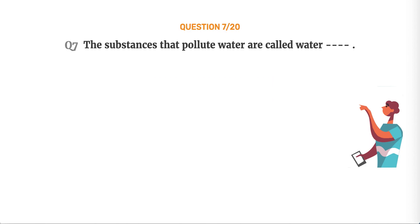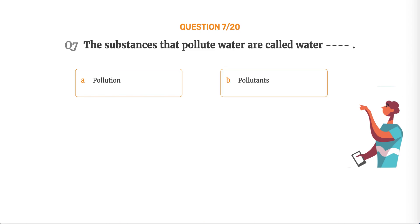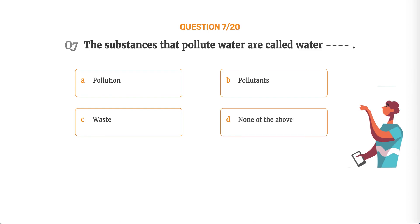Question number 7. The substances that pollute water are called water dash. Option A, Pollution. Option B, Pollutants. Option C, Waste. Option D, None of the above.